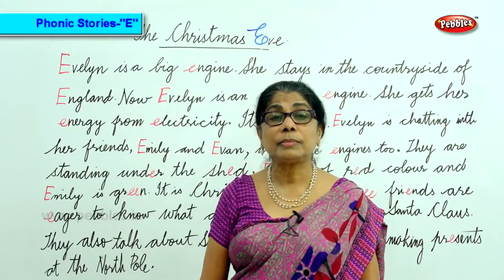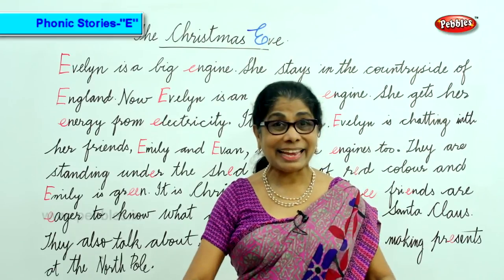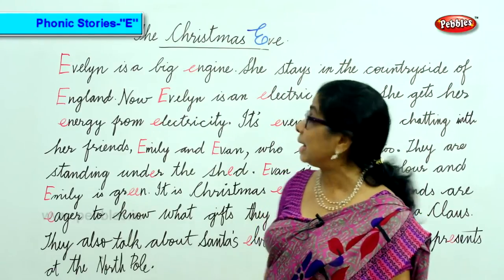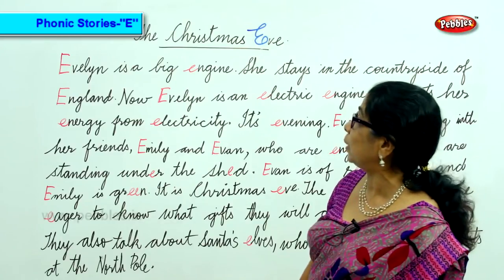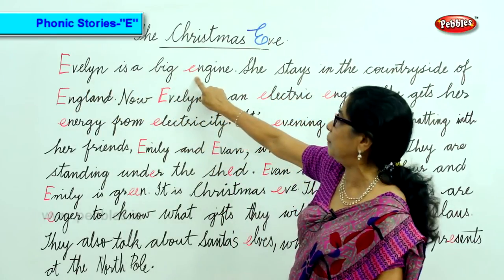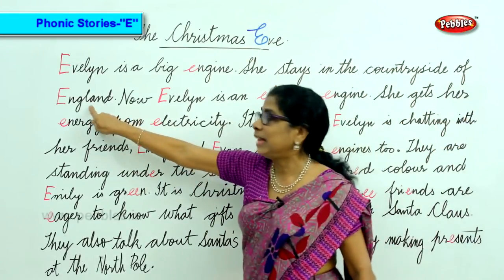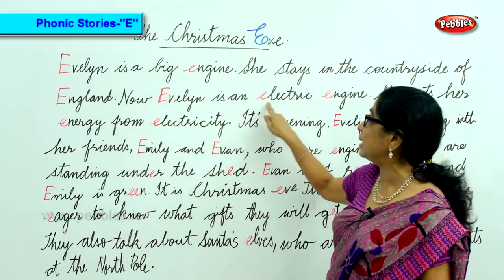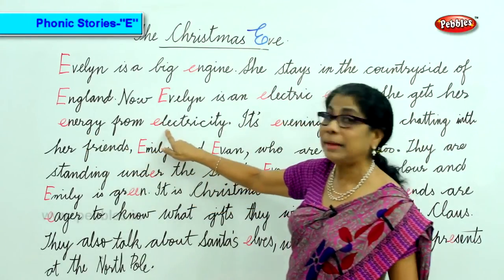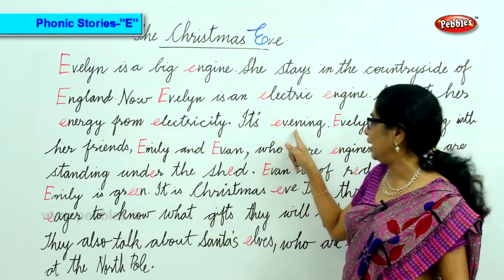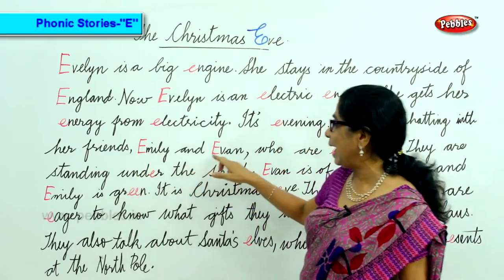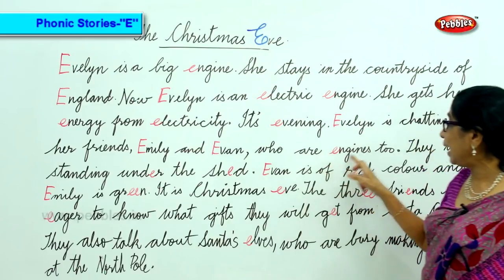In this story we are going to do the E sound, as in E in Egg. Let's look at all the words in this beautiful story about the Christmas Eve. Evelyn is a big engine. She stays in the countryside of England. Evelyn is an electric engine — she gets her energy from electricity. It's evening. Evelyn is chatting with her friends Emily and Evan, who are engines too.